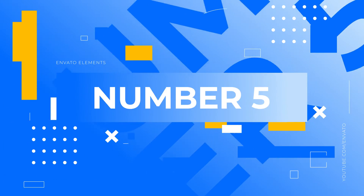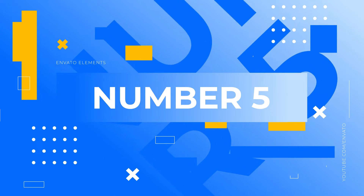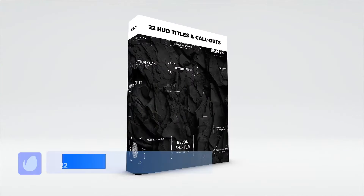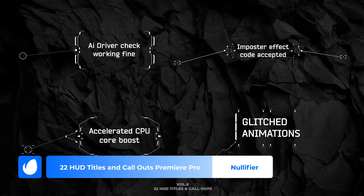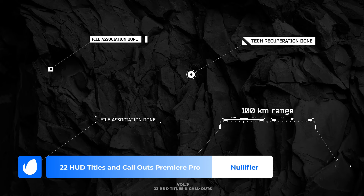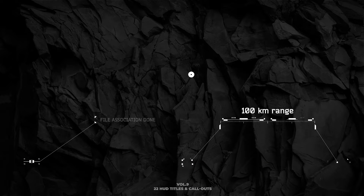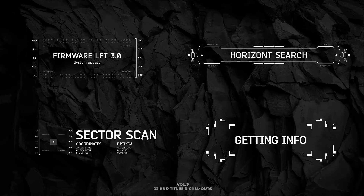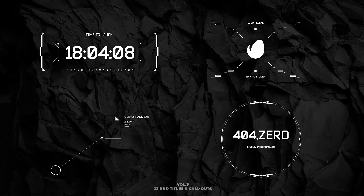Number 5. 22HUD Titles and Callouts Premiere Pro by Nullifier. With glitched animations and a hardcore font, this template takes your viewers on a journey into the world of tech. The style portrayed here is very similar to what you'd expect in a Mission Impossible movie, perfect for when you need to strike a sophisticated and intelligent tone.